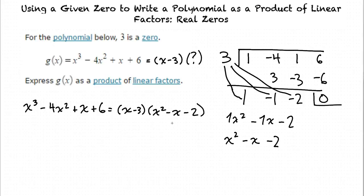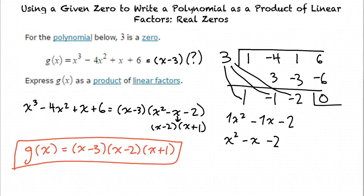Just as we did in the last video, we can factor x squared minus x minus 2 into x minus 2 times x plus 1. So our final answer becomes g of x equals x minus 3 times x minus 2 times x plus 1.